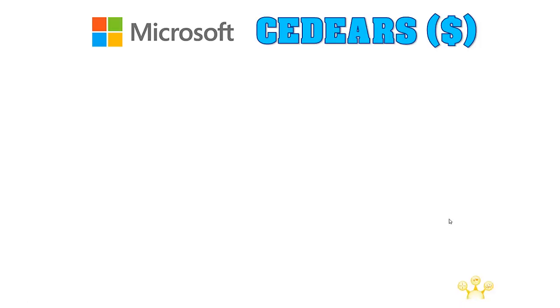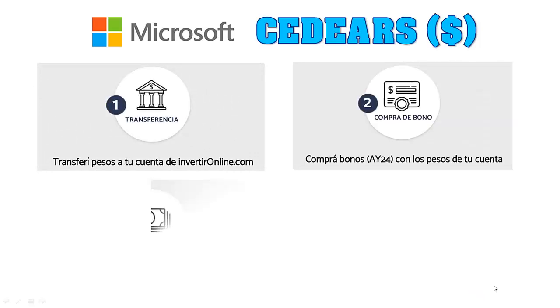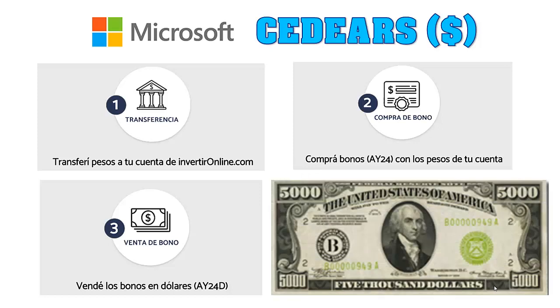Como conclusión, ¿cómo hacer la diferencia? Primero, deberás detectar CDRs en cartera por encima del dólar MEP. Segundo, tener liquidez en pesos en cuenta comitente. Tercero, una vez confirmada la venta del CDR, comprar bonos en pesos y convertirlos a dólar MEP a través de la venta del mismo bono pero en dólares. Y por último, transferir los dólares físicos a una cuenta bancaria tradicional.